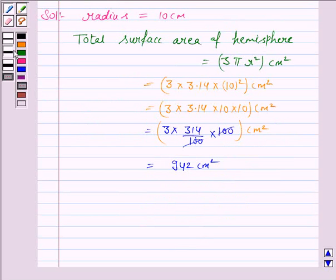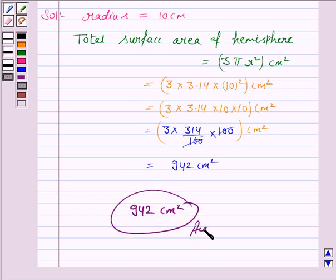Hence, the total surface area of hemisphere is 942 cm squared. That is all for this session. Goodbye and take care.